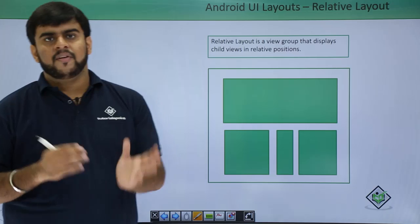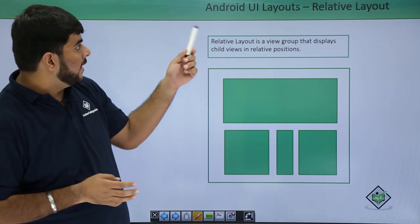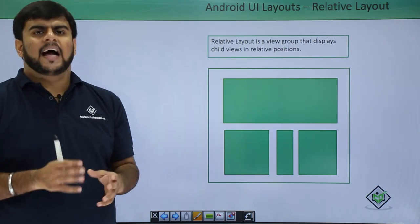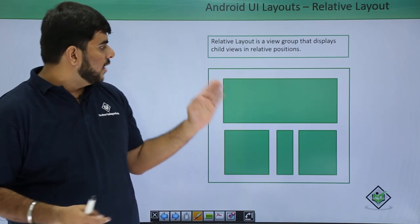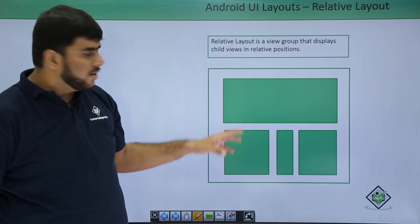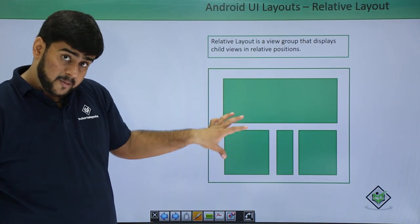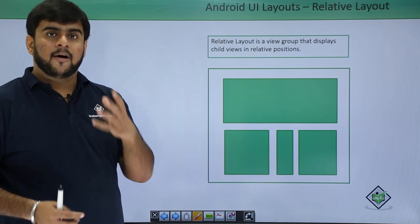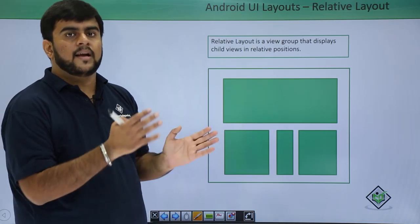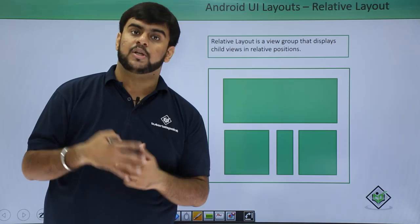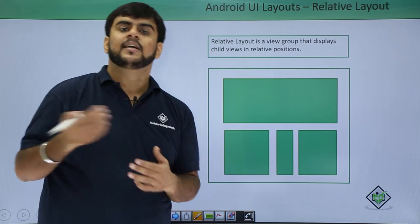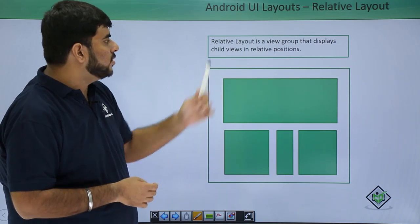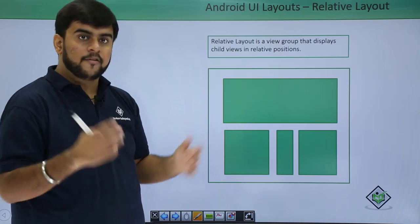So then we came up with the next layout that we call the relative layout. As the word suggests, if you are having a layout then all the children of this particular layout are in relation with each other — aligned based on the position of the previous or next child. A relative layout is a view group that displays child views in relative positions.